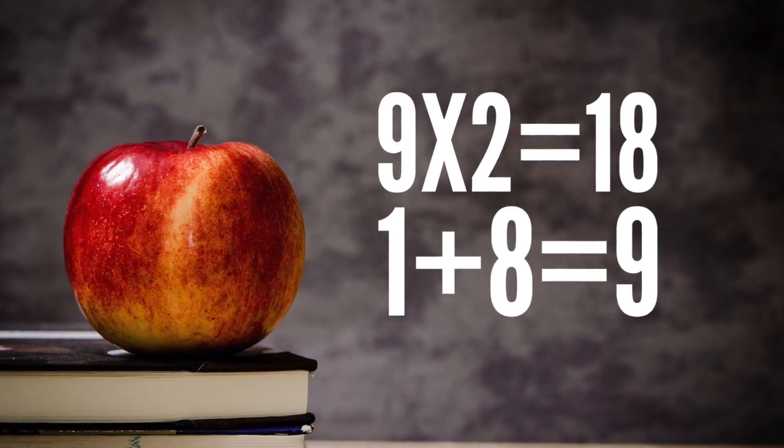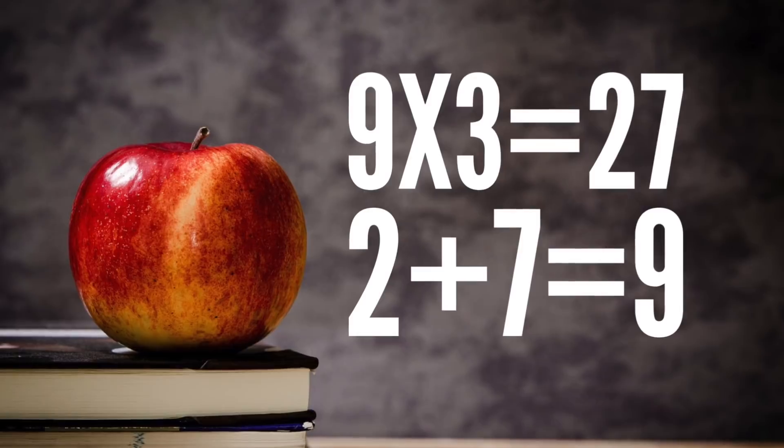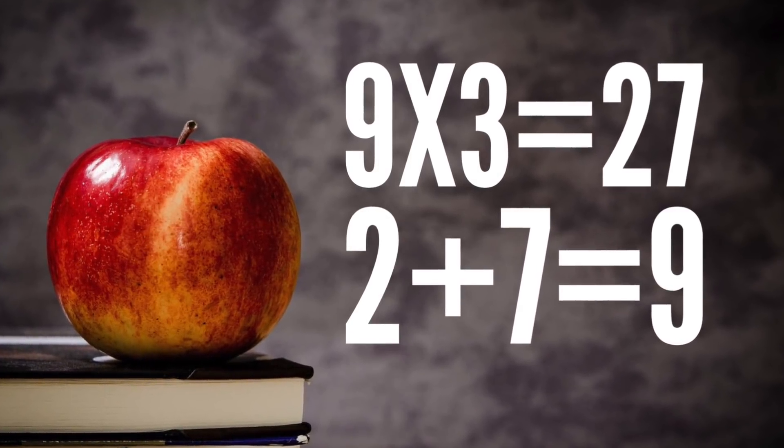But if you take the 1 and the 8 of the 18, add them together, you get 9. 9 times 3 is 27. If you take the 2 and the 7 of the 27, add them together, you get 9.